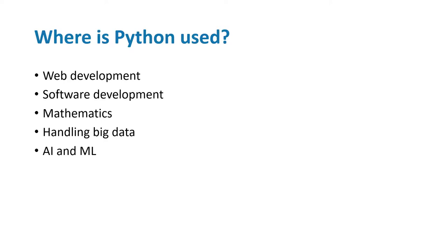Where is Python used? Python is used across various industries and areas. First is web development - the modern world of web development has become prominent, and Python has built-in frameworks like Django and Flask which help with web development activities. Traditional software development can also be done with Python, and advanced mathematical work can be done using Python as well.